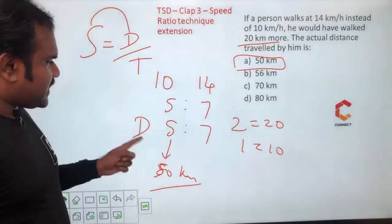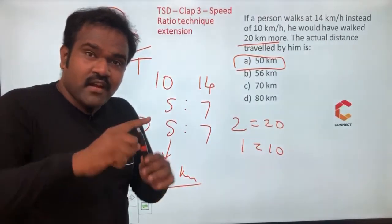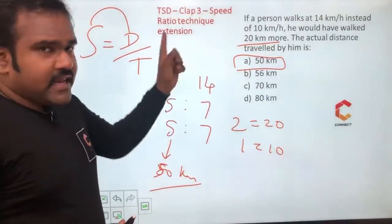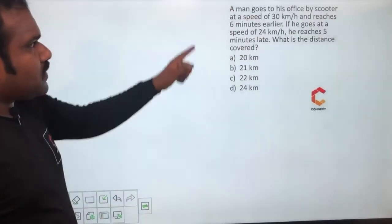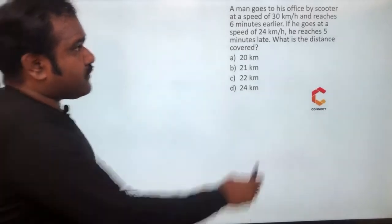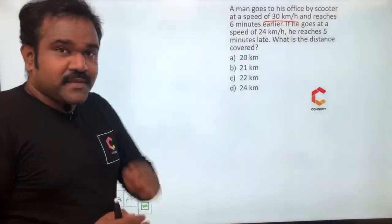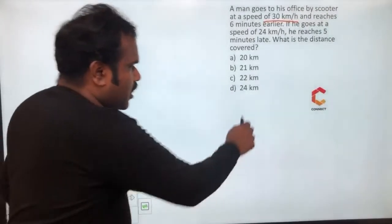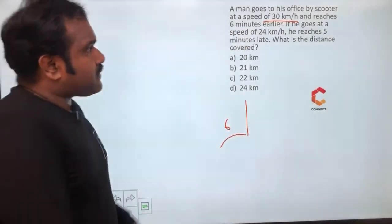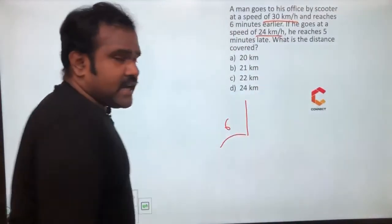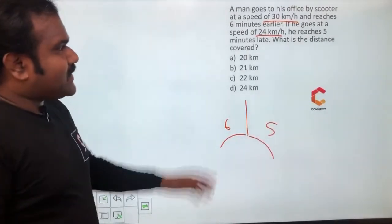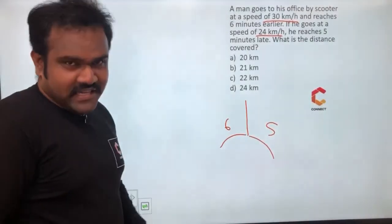Compared to the previous example, here we are comparing speed and distance — directly proportional — whereas speed and time are inversely proportional. Now one more model: a man goes to his office by scooter at a speed of 30 km per hour; at that speed he reaches six minutes early. If he goes at 24 km per hour he reaches five minutes late. What is the distance covered?